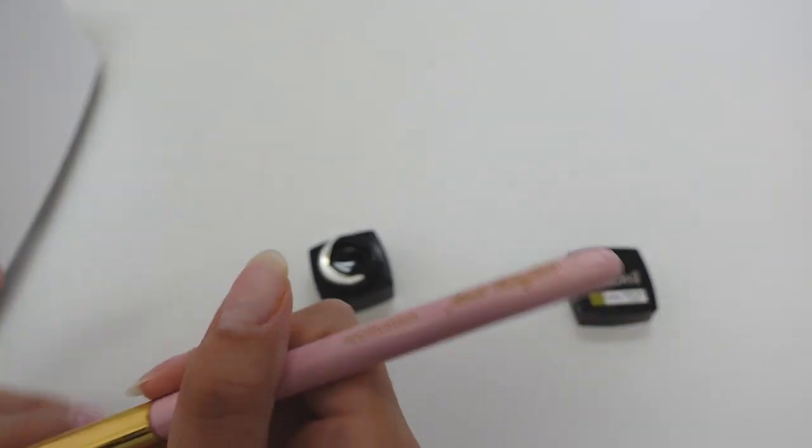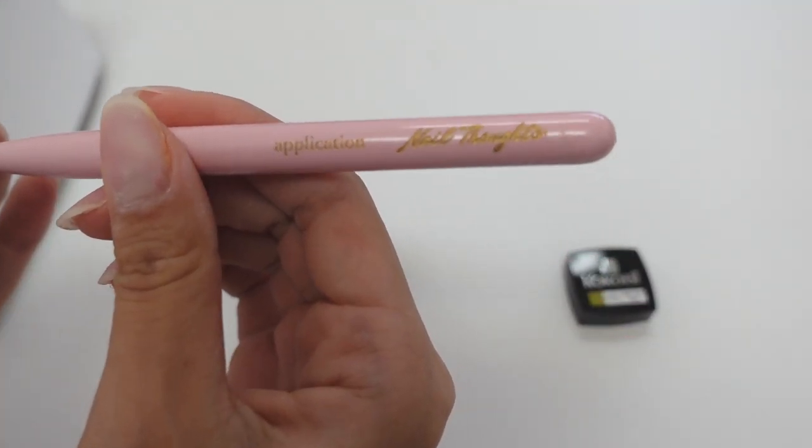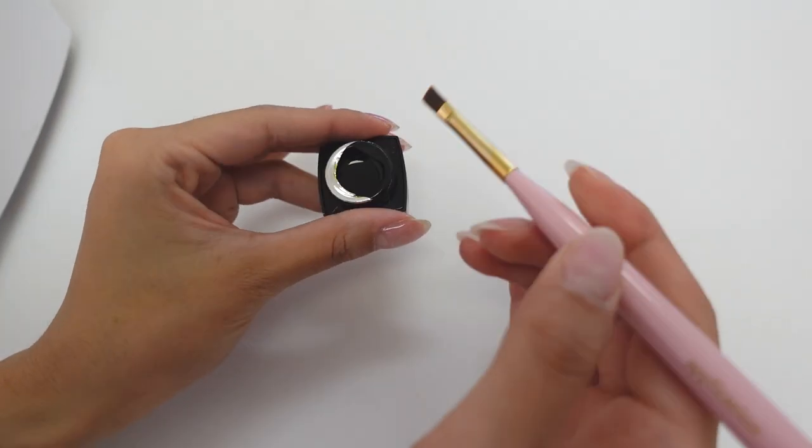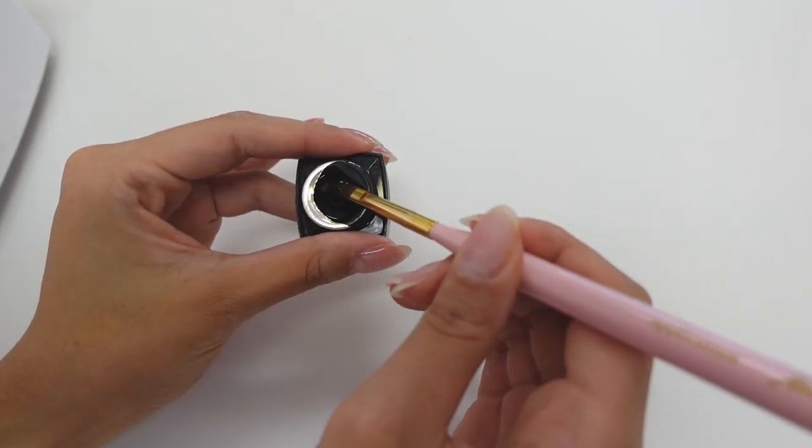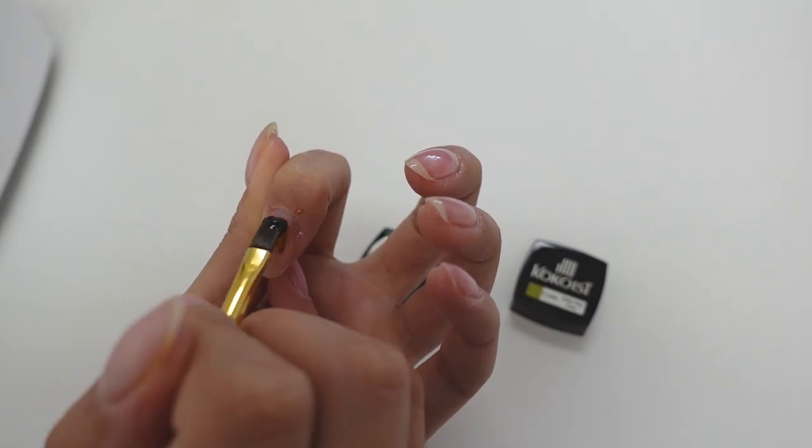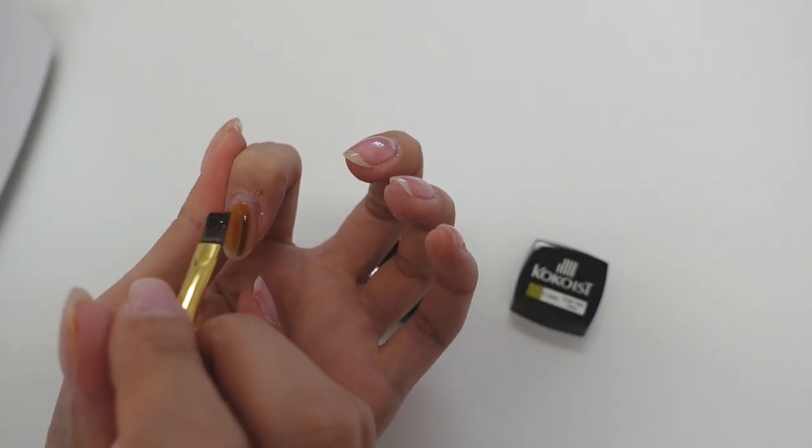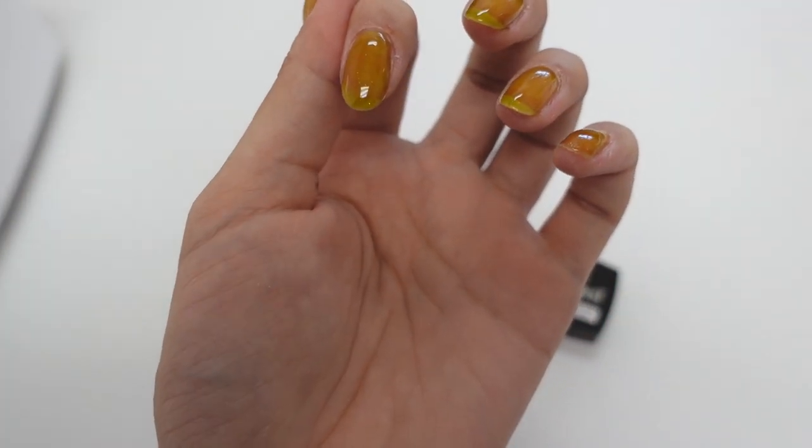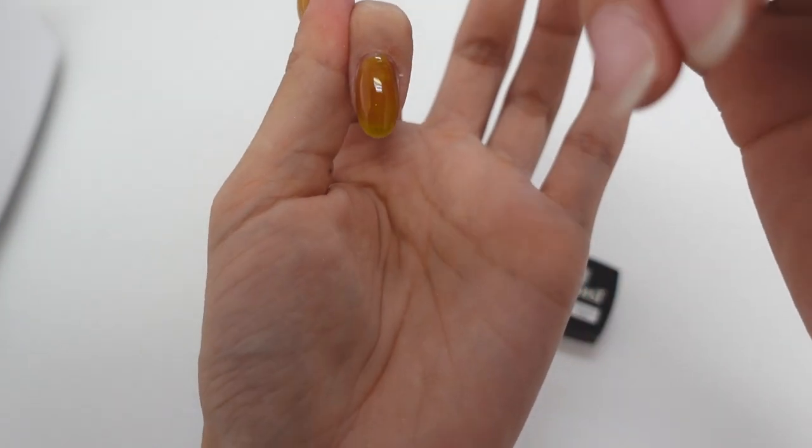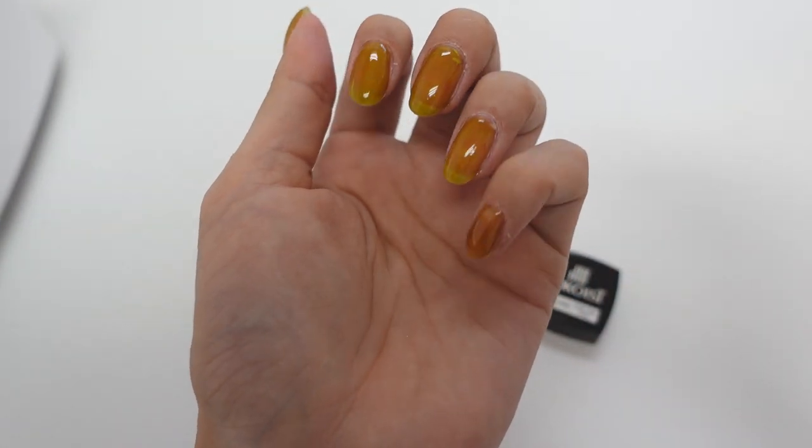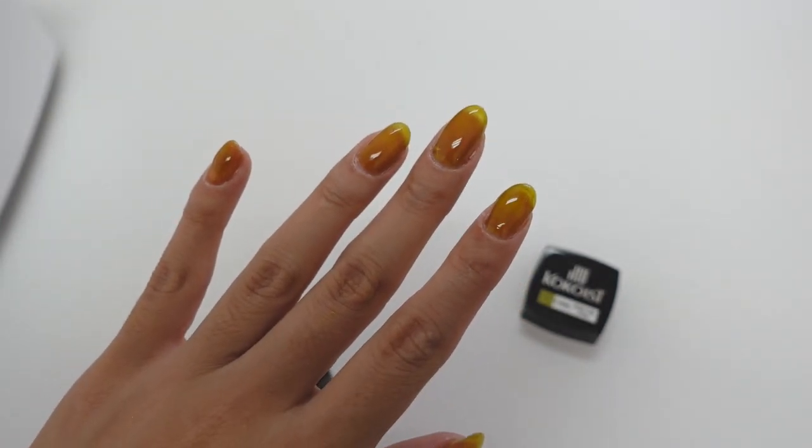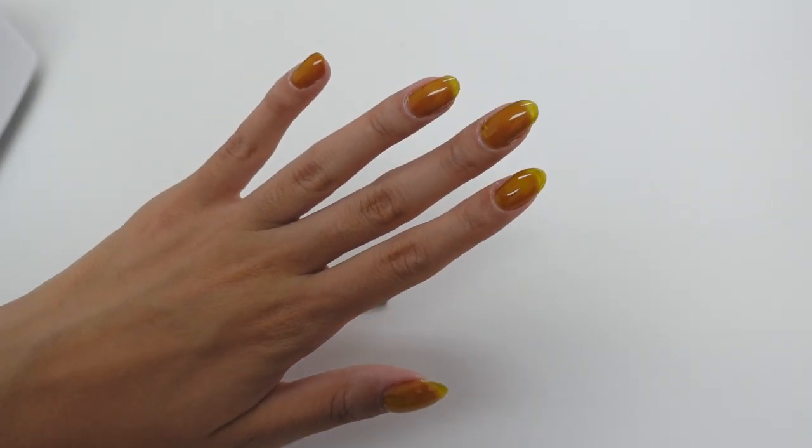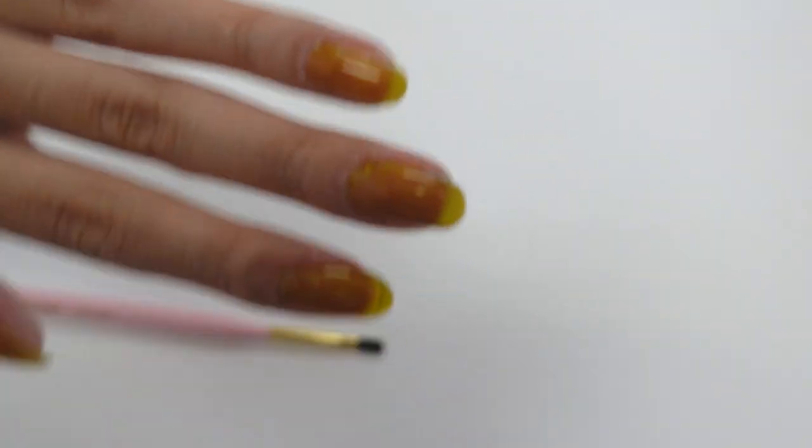I'm going to go ahead and apply that with our nail thoughts application brush. We're just going to dip it in a little bit. That is what the first layer looks like for that one. And I think I'm going to go in with a second layer just to increase the opacity a little bit. And that is a second layer of that color right there.